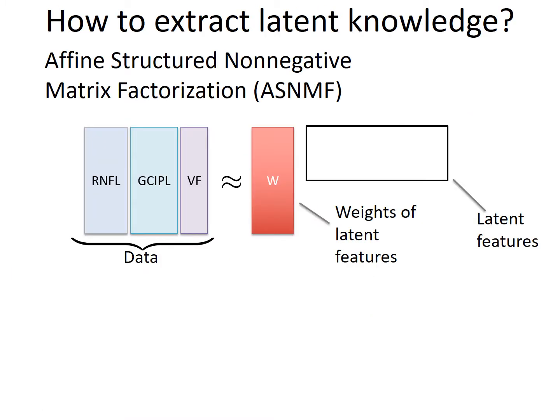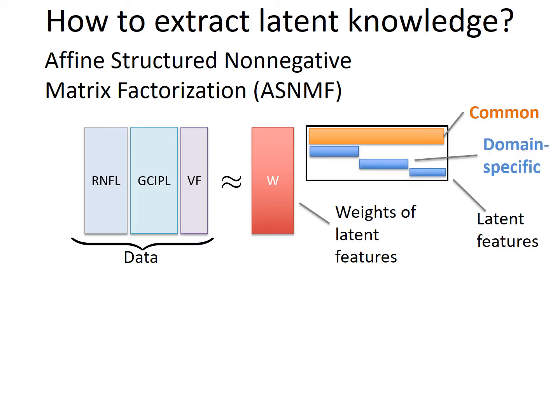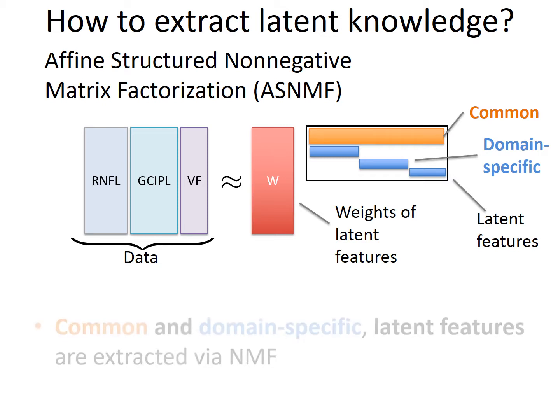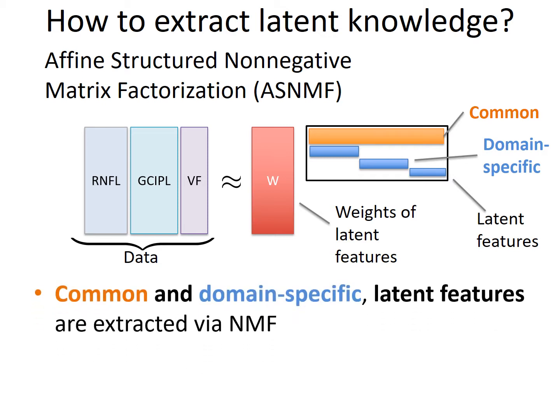We introduced two different techniques. The first is Affine Structured Non-Negative Matrix Factorization, or ASNMF. With ASNMF, both common and domain-specific latent features are extracted through matrix factorization, where common features are used to conduct domain transformation, such as OCT to visual field transformation.